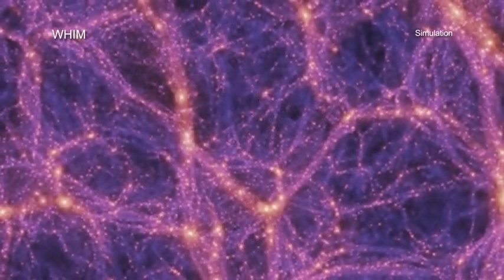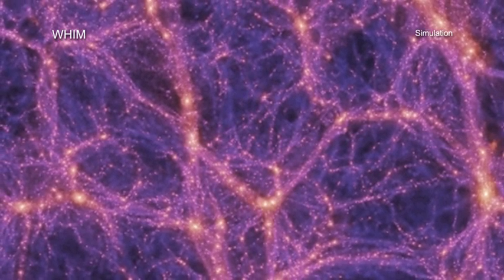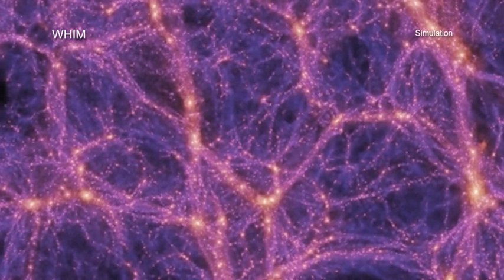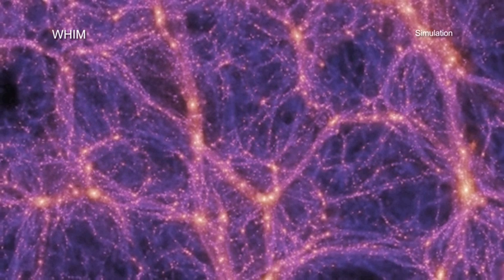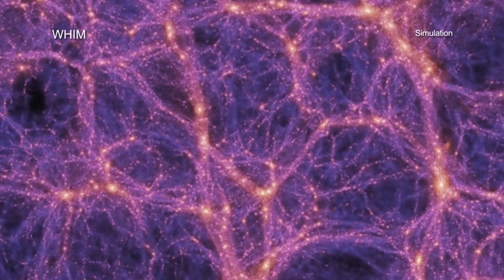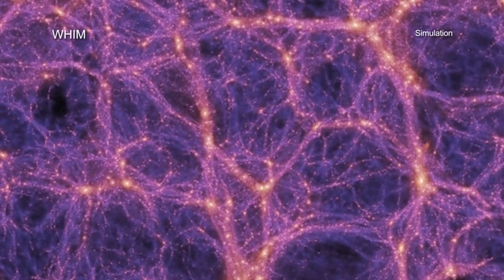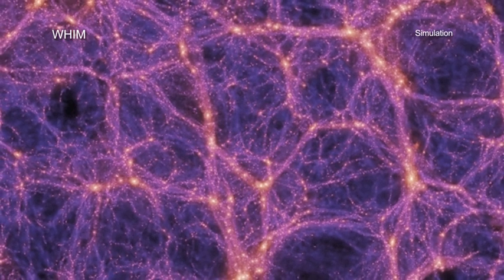One idea is that the missing mass gathered into gigantic strands or filaments of warm gas—that is, temperature less than 100,000 Kelvin—and hot gas, as in hotter than 100,000 Kelvin—in intergalactic space. These filaments are known by astronomers as the warm-hot intergalactic medium, or WIM.